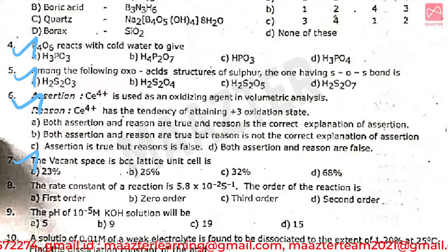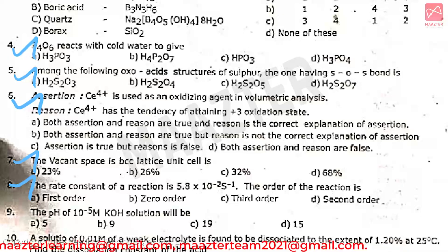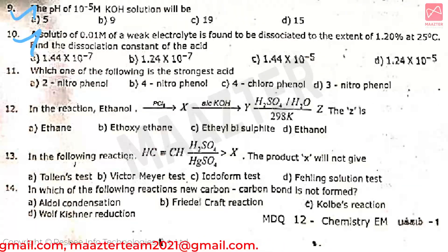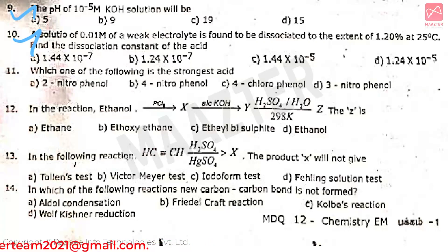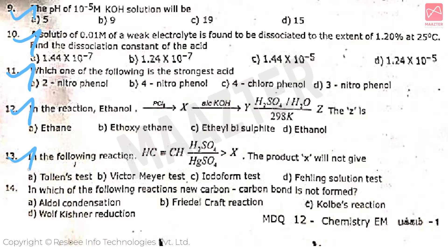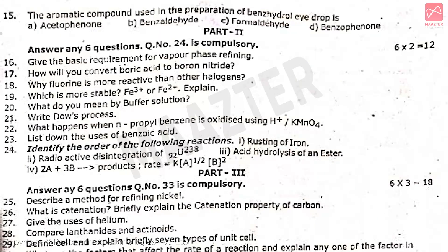Then a question on the vacant space in a BCC lattice unit cell, then a question on the rate constant, then a pH-related question, then find the dissociation constant of an acid, then which one of the following is the strongest acid. Then two reaction questions — find product Z and product X. Then a question on carbon bonding and a final question on aromatic compounds. That completes the one mark section.